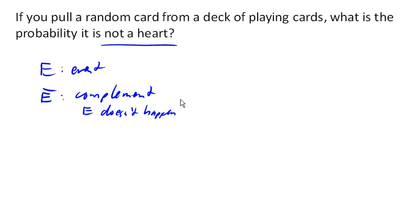Now, because the probability of something happening is 100%, or 1, the probability of an event happening and the probability of the event not happening need to add up to 1, or 100%. So the probability of an event not happening is 1 minus the probability of the event happening.